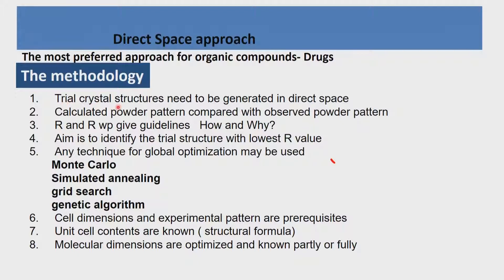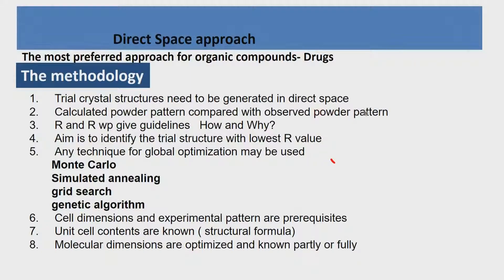First, a trial crystal structure needs to be generated in direct space. You can also use other experimental techniques — for example, NMR — to get a starting guess model, put it into this procedure, and then try to get to the structure. Once you have a trial structure, you calculate the powder pattern and compare it with the observed powder pattern. The R value, Rp and Rwp, will be the guidelines.